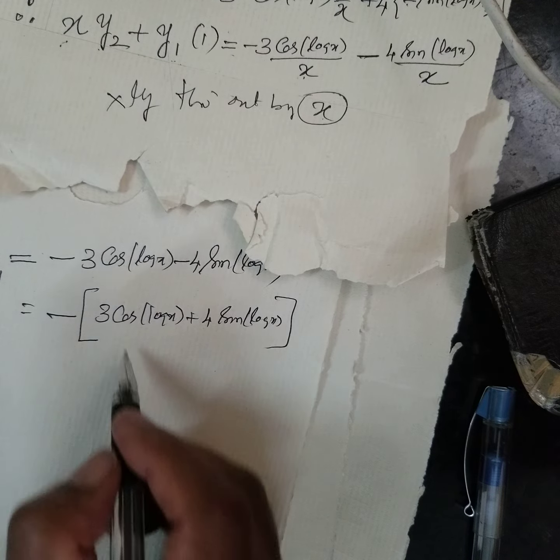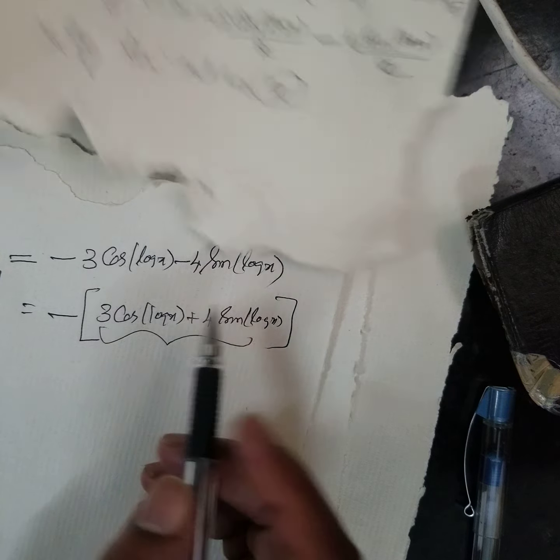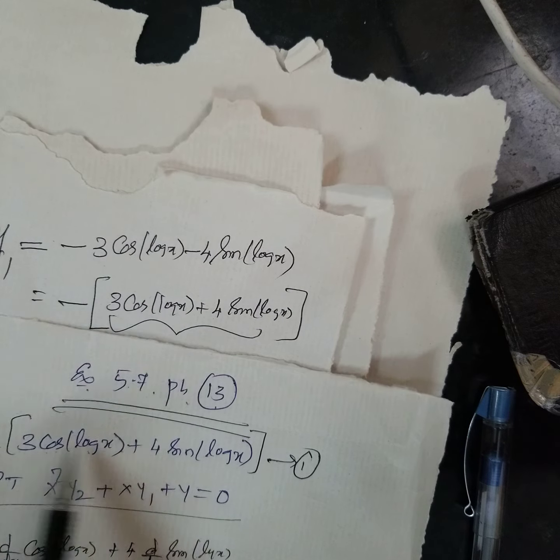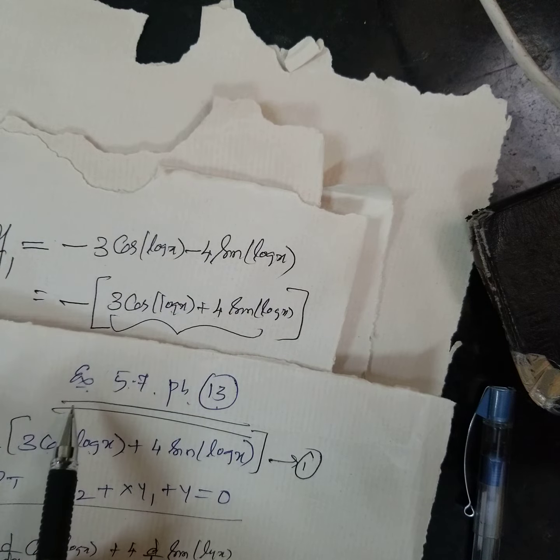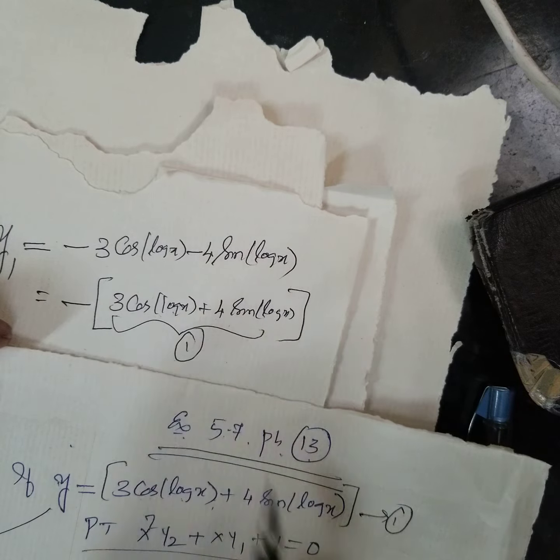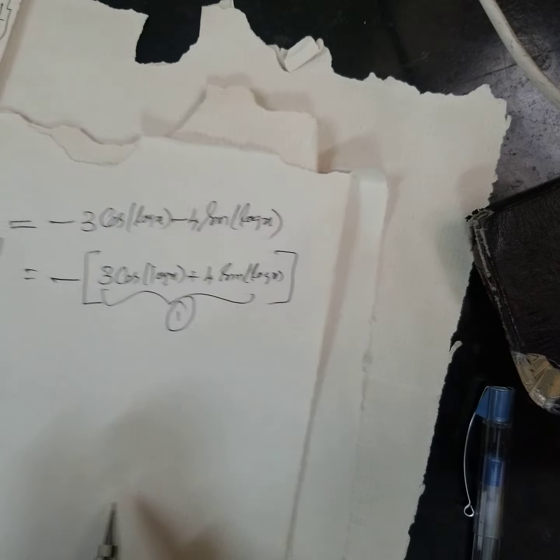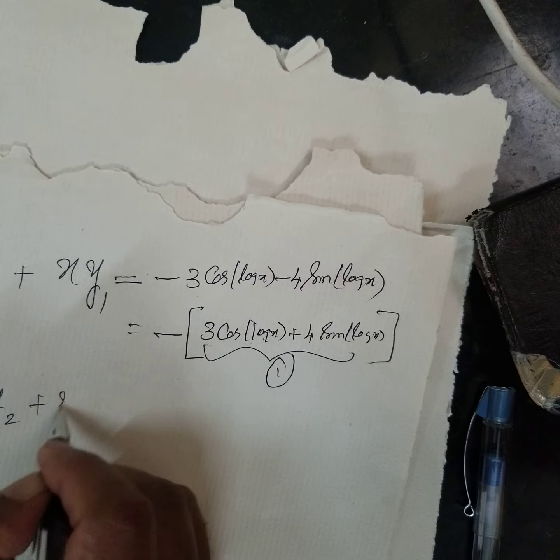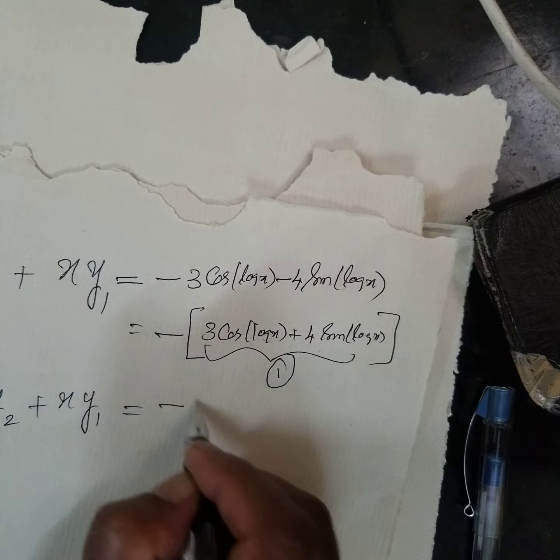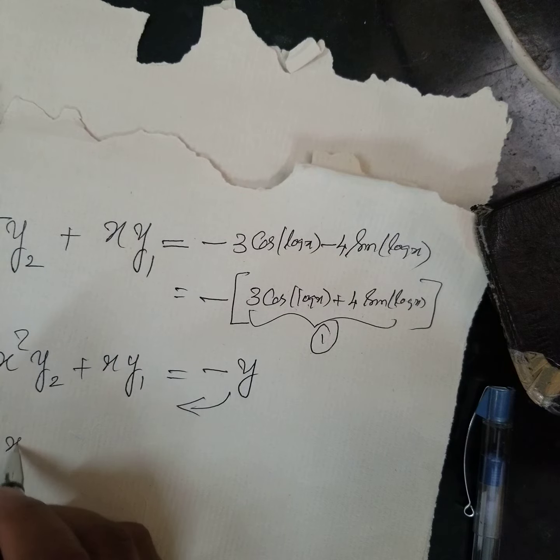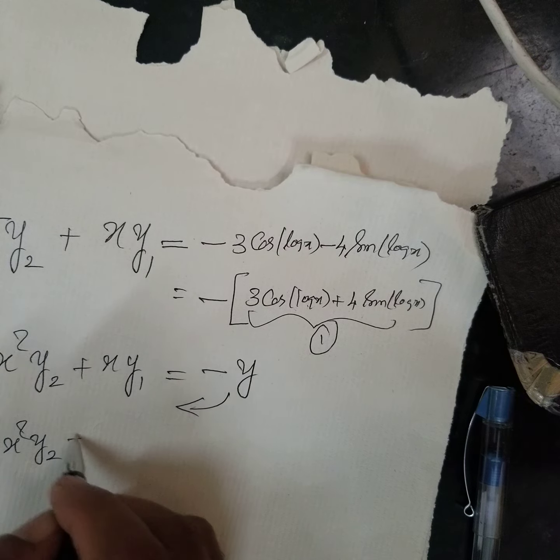Now, this is what minus, I am taking common factor. 3 cos log x plus 4 sin log x. I am taking common. But this is same as what? 3 cos log x plus 4 sin log x. It is nothing but y, isn't it? It is same as y. This is from one, equation one. Therefore, what I do is x square y2 plus x y1 equal to minus y. I am bringing this side.